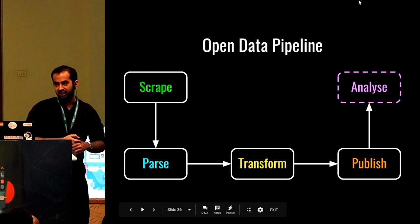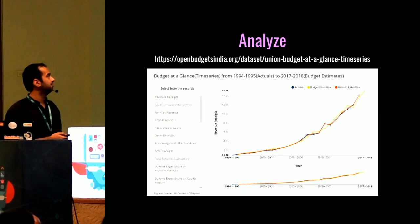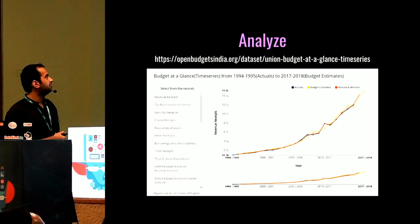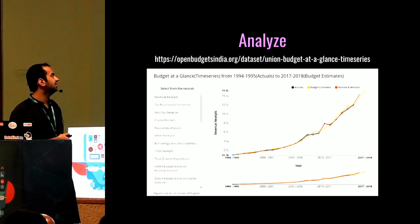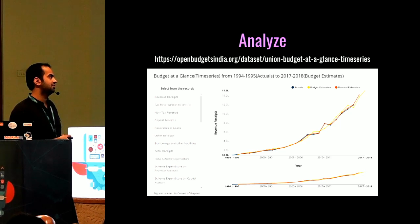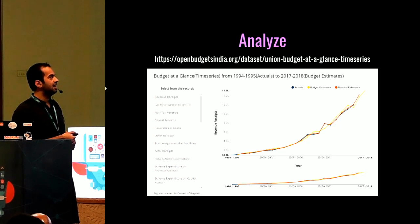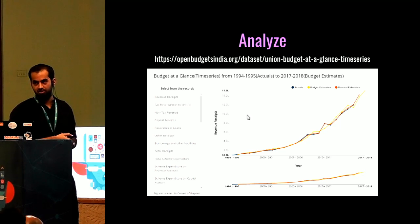The last component of the data pipeline is analysis. You can see a time series of budget at a glance for the union government — the central government from 1994 to 2017-18. You can compare recovery of loans, total revenue, total expenditure, and so on, and see how trends have been. You can also compare actual accounts, estimates, and revised estimates.